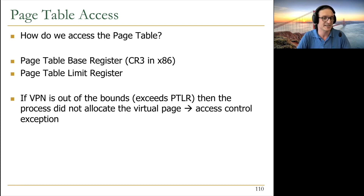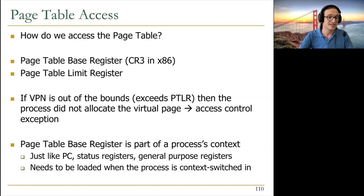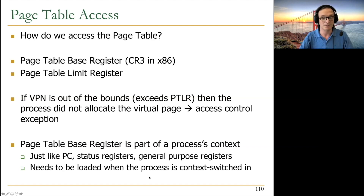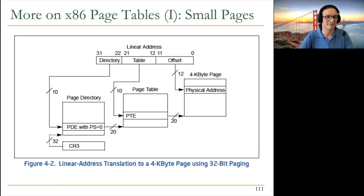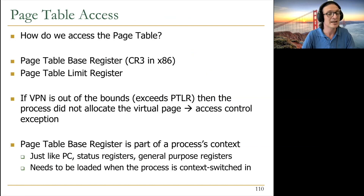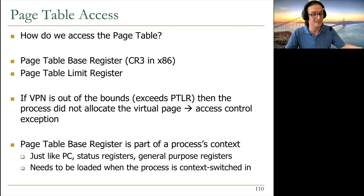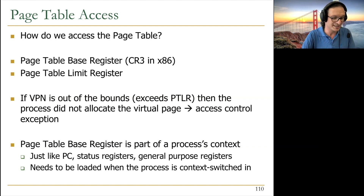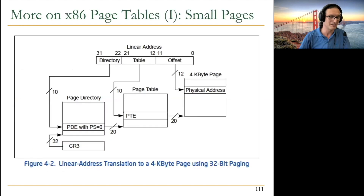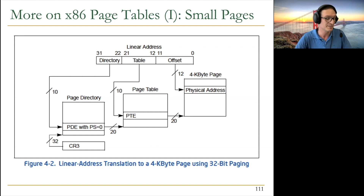The page table base is part of the process context — it's an architectural register that must be loaded when the process is context-switched in. If you don't do that, the process will use someone else's page table base register, directly compromising security and privacy. Hardware bugs at any level of this process can directly affect security and privacy.